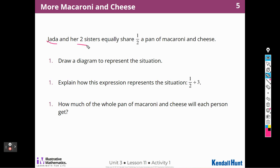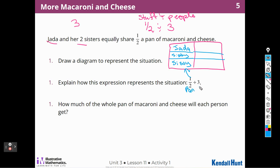Well, okay, so it's Jada and her two sisters, so that's three people sharing half a pan of macaroni. And when we did the last unit, we did stuff divided by people. So the stuff is half divided by three people. So let's draw that diagram. So here's my pan of macaroni and cheese, and we have half a pan left, and we're going to divide that half a pan into thirds, because we have three people to share it with. So Jada would get a piece, sister number one would get a piece, and sister number two would get a piece. So I have to do the whole pan in thirds.